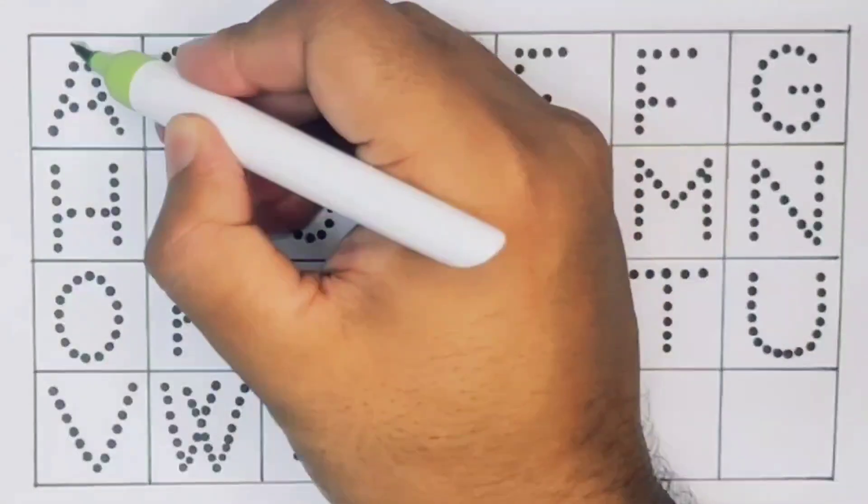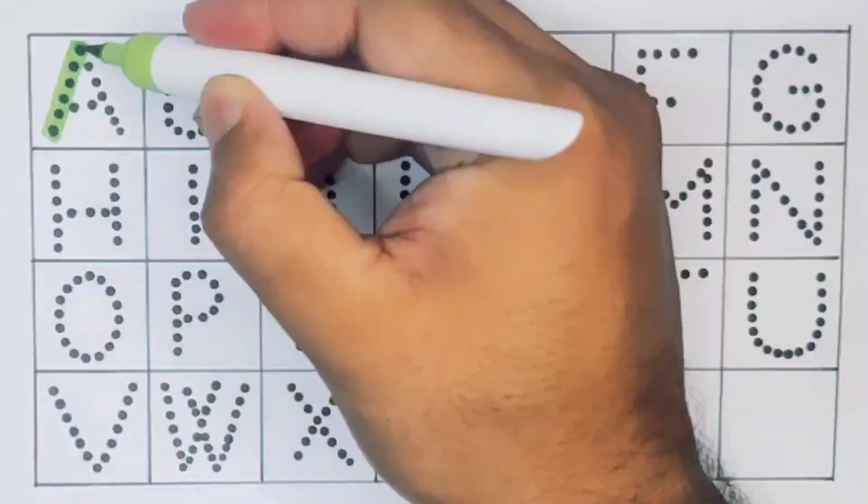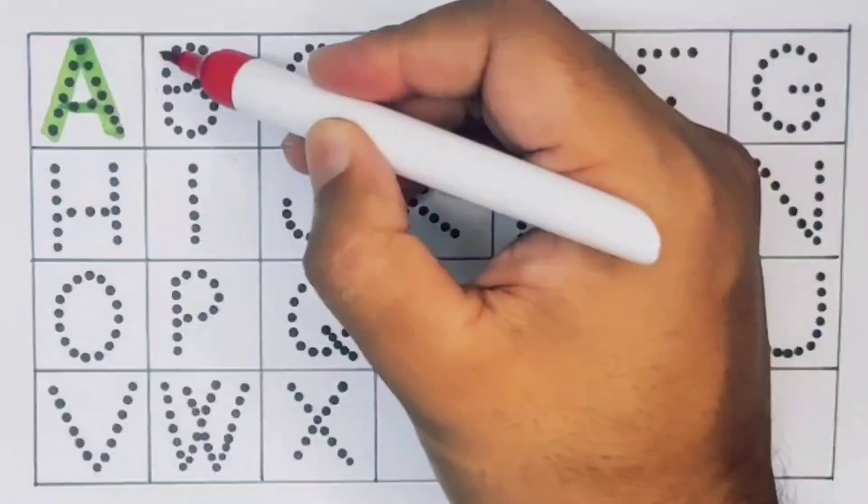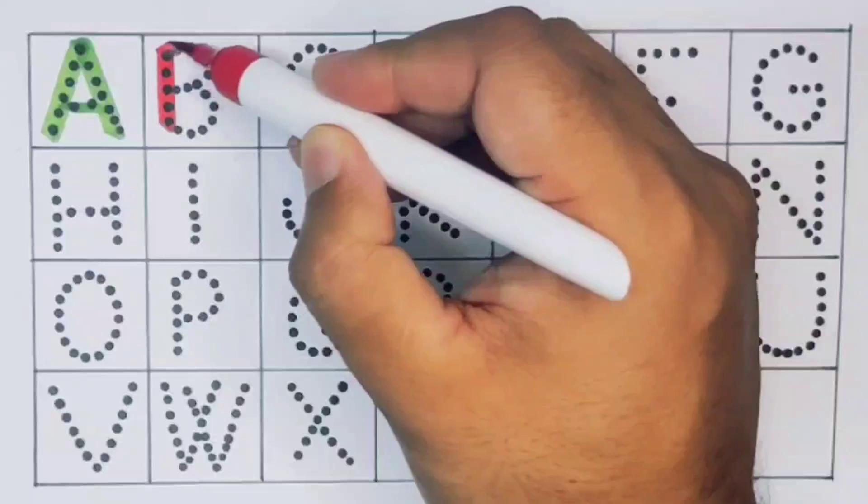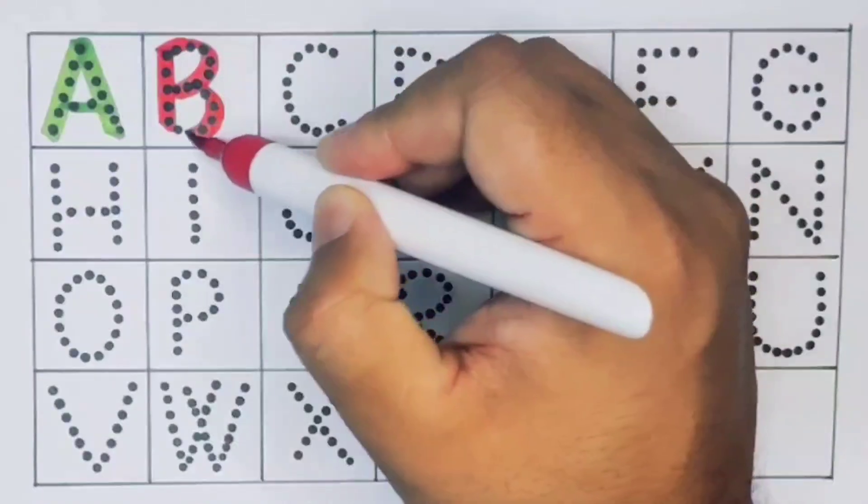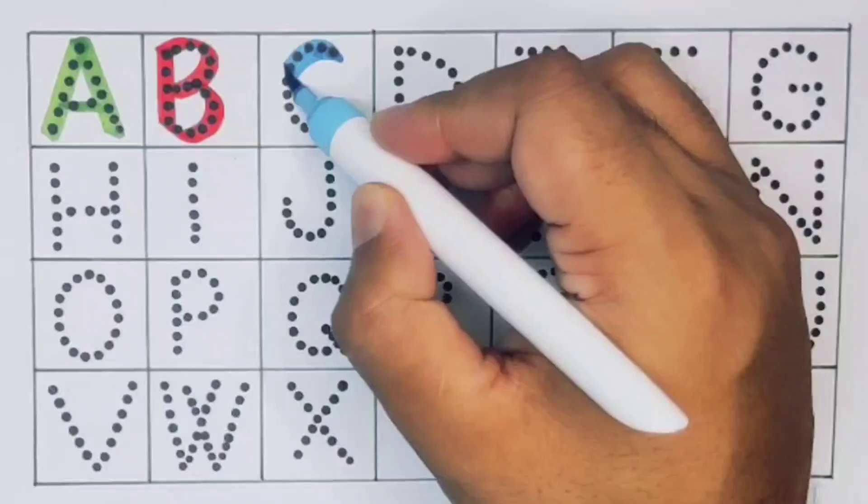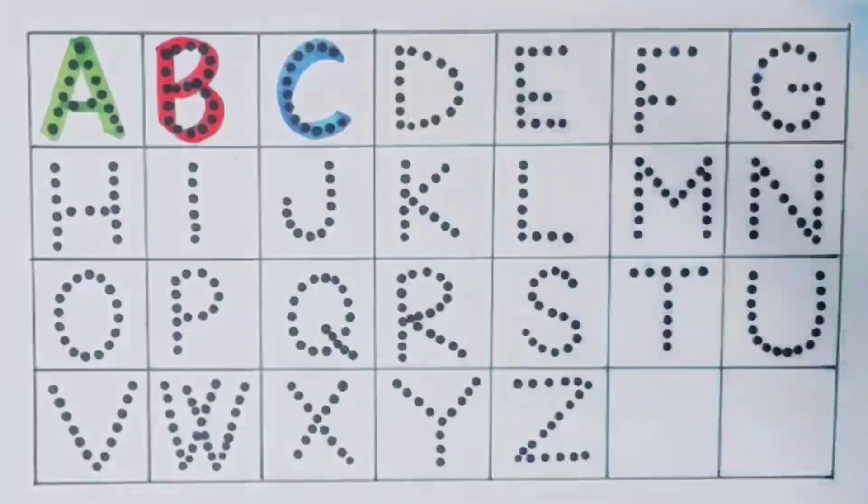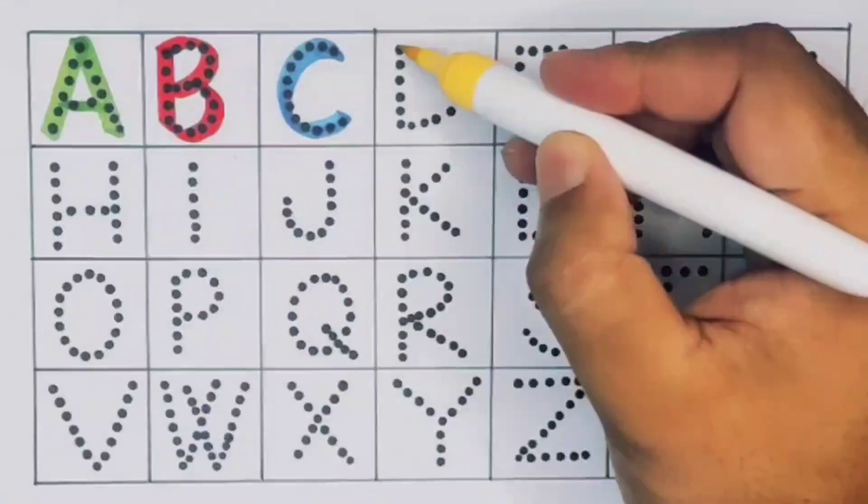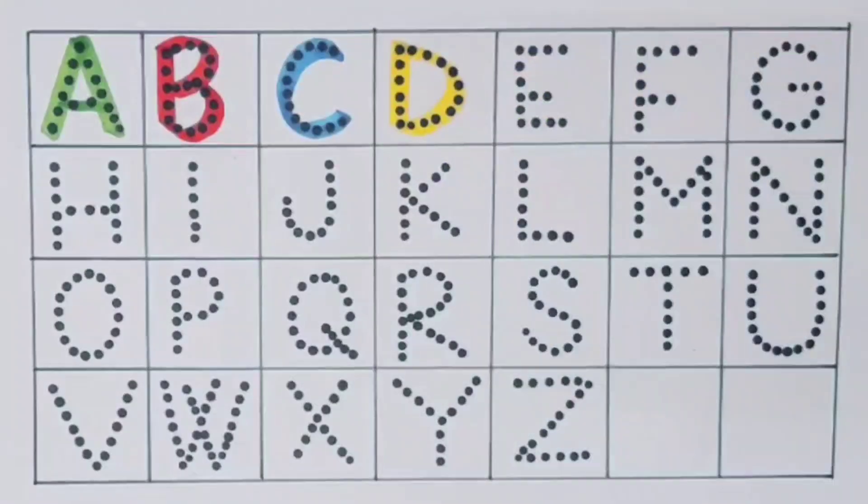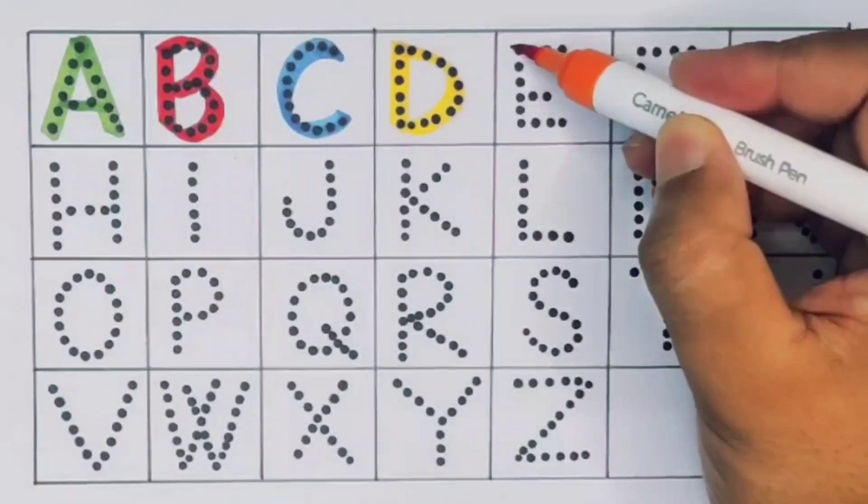A for ant. Next, B for butterfly. Next, C for caterpillar. Next, D for dolphin. Next, E for eagle.